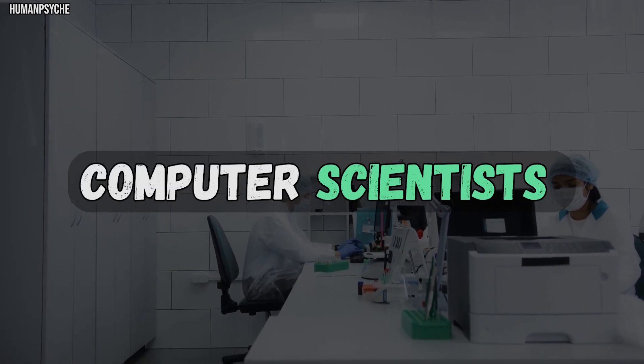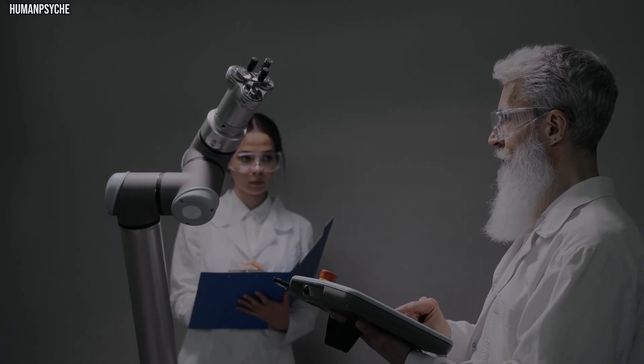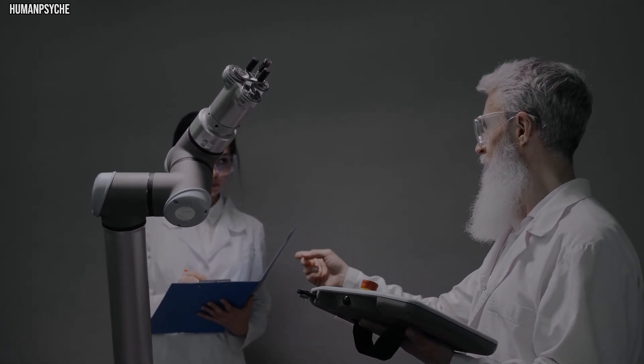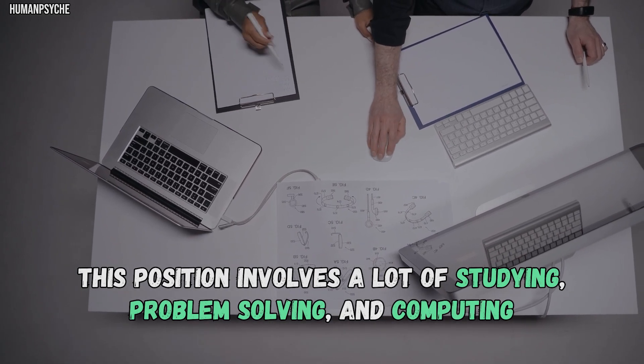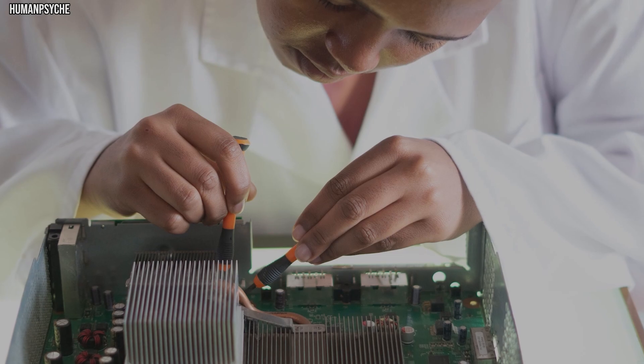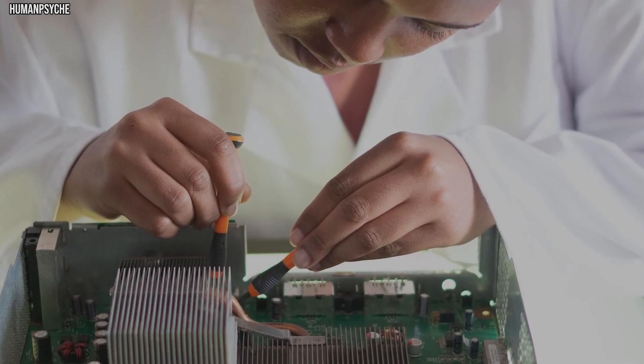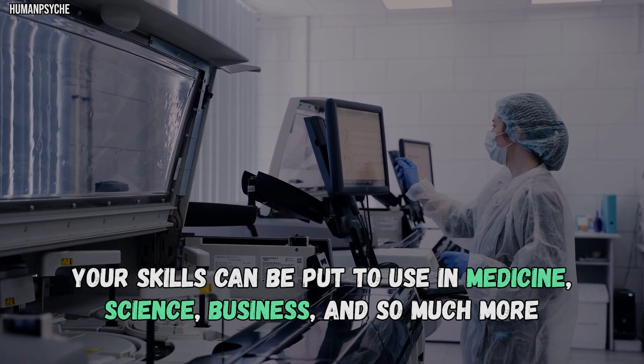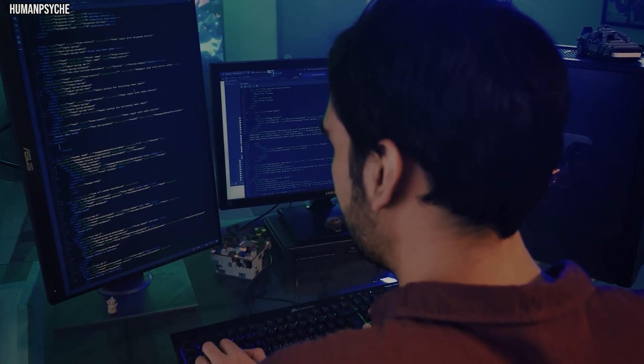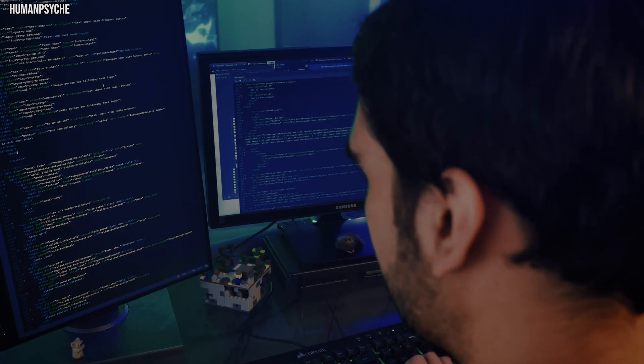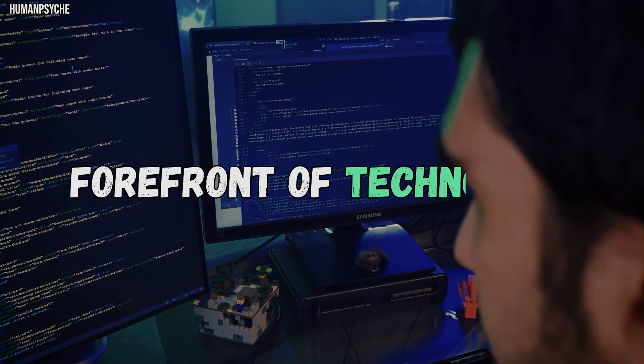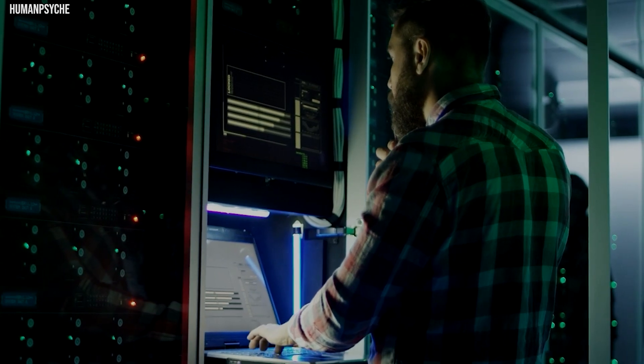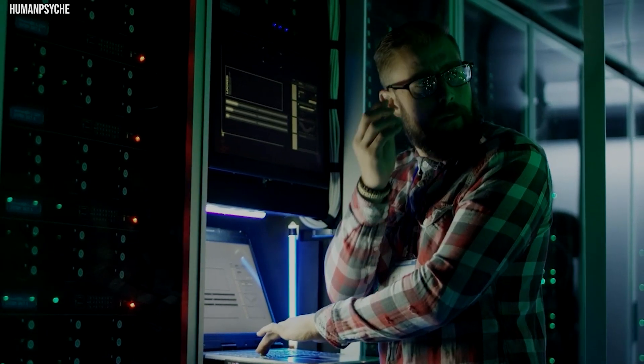Number 3: Computer Scientists. Computer scientists get to invent and design new computer technology and find innovative ways to use current tech. This position involves a lot of studying, problem solving, and computing. One of the best aspects of computer science is that you can choose your industry. Your skills can be put to use in medicine, science, business, and so much more. As computer scientists, INTJs can push their intellectual capacities to the limit and be at the forefront of technology. Furthermore, while working on their own projects, INTJs can help people all the world by improving the current state of technology.